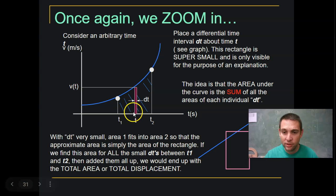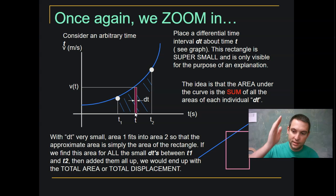So this rectangle is now super small and it's only visible for the purpose of an explanation. The idea is that the area under the curve is the sum of all of these tiny little slivers. So if we took that deli slicer again and we sliced it up into infinitesimally small slivers and we add up all of those slivers, then that's going to give us our actual area.